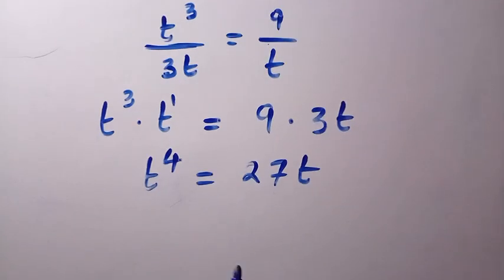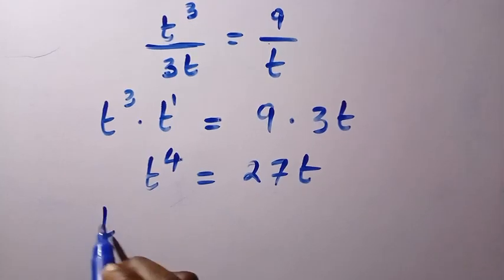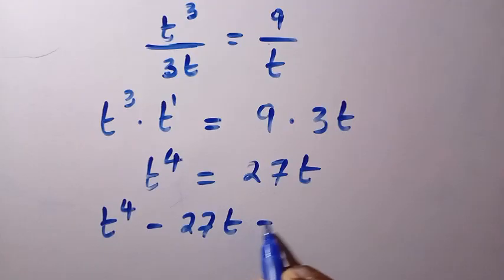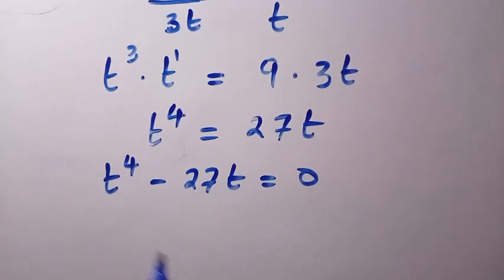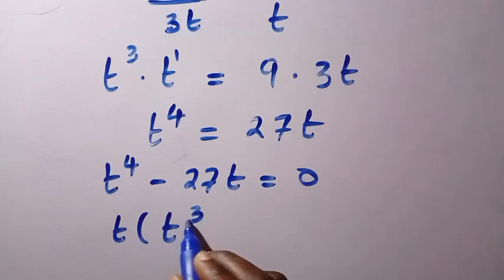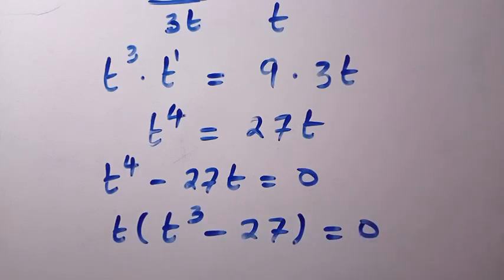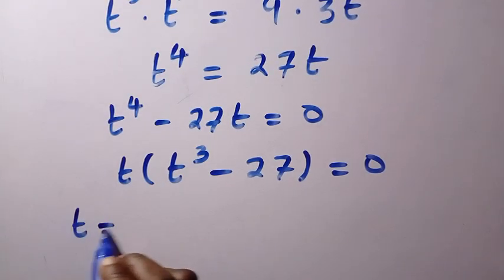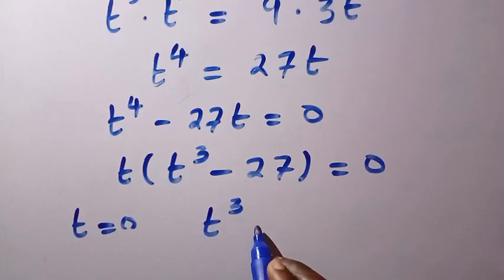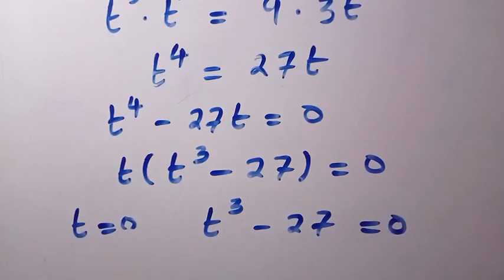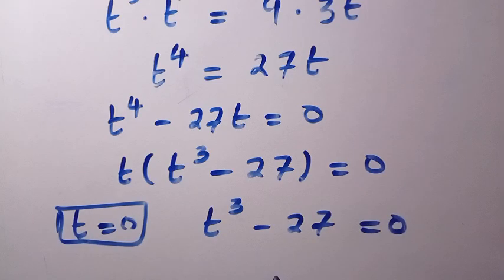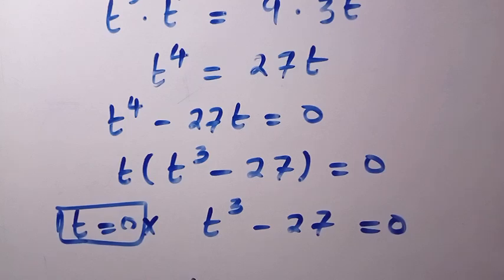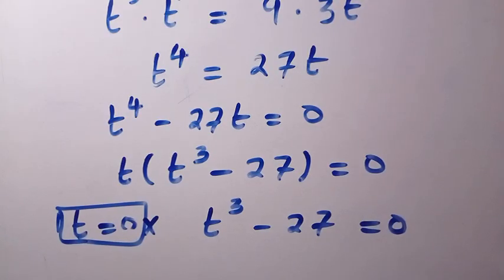We are interested to get all the solutions. So we rearrange: t raised to the power of 4 minus 27t equals 0. If we factor out t, we get t multiplied by t raised to the power of 3 minus 27 equals 0. If t equals 0, that would make the original fraction undefined, so t equals 0 is rejected. We focus on t raised to the power of 3 minus 27 equals 0.